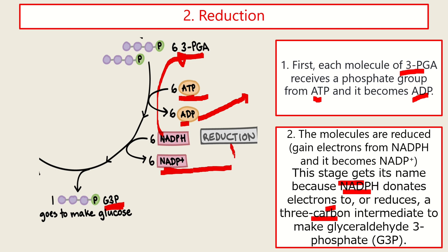And don't get confused. When we say reduction, it is gaining electrons or hydrogen. So it depends on the situation. In this process, the 3-PGA gains electrons.